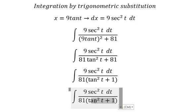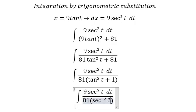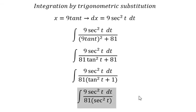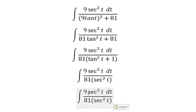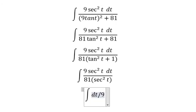This one we got secant of t square. We simplify 9 secant of t square with 81 secant of t square, and we got dt over 9.